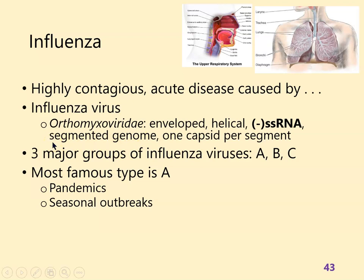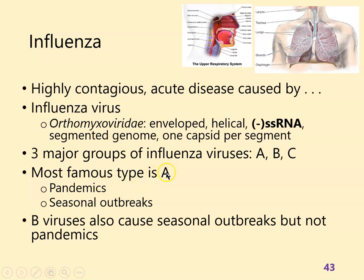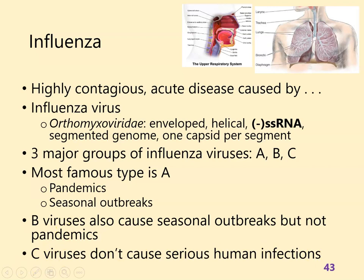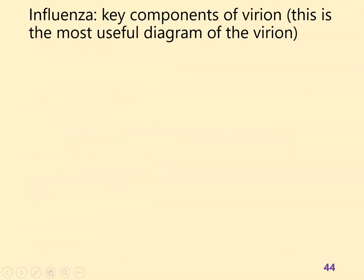The three major groups of influenza viruses — the ones that cause the pandemics we're very afraid of — are influenza A viruses. B viruses cause seasonal outbreaks, so if you get the trivalent influenza vaccine, it's usually two A strains and one B strain. C viruses don't seem to cause serious infections, so we don't think about them very much.